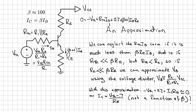And in the case where this term RTH times IB is much less than beta times IB times RE, then we can make things much simpler. Let's just look at how that works.